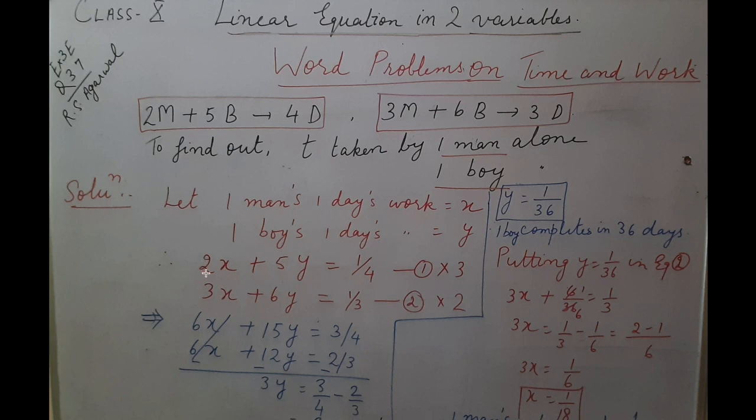So 2 men and 5 boys 1 day work is 1/4. Same way: 3 men is 3x, 6 boys is 6y, and they finish in 3 days, so their 1 day work will be 1/3.